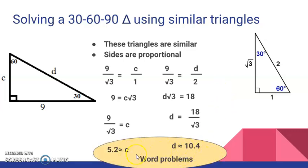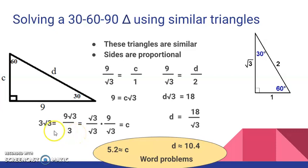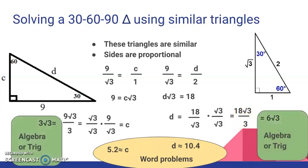Now, if this were a word problem, I would probably stop here, but if I've got algebra or trig and I need to use simplest radical form, I would need to rationalize these two denominators. Over here, multiply by radical 3 over radical 3, which gives me 9 radical 3 over 3, which is really 3 radical 3. And on this side, multiply by square root 3 over square root 3, to give me 18 square root 3 over 3, which is really 6 radical 3. Those are the appropriate answers for an algebra or trigonometry problem — it just depends on the situation. I recognize there are other ways of solving a 30-60-90 triangle, but this technique uses proportions. It's fairly straightforward and pretty consistent. Thank you.